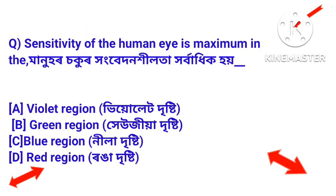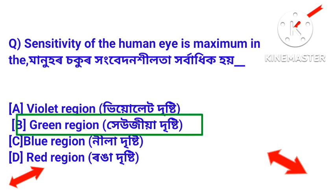Next question: sensitivity of the human eye is maximum in which region? Manuhar shukur hangvedan hilota hor badhik hoi? Answer: green region — hiyo ziyad rizti manuhar shukur hangvedan hilota hor badhik hoi hiyo ziyad rizti khetroth.